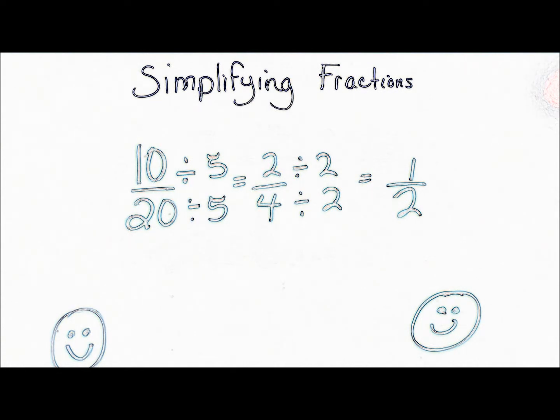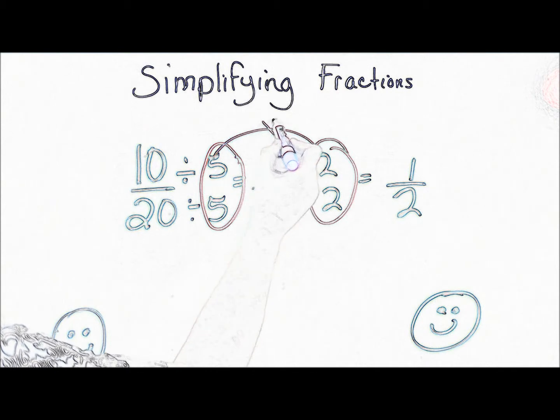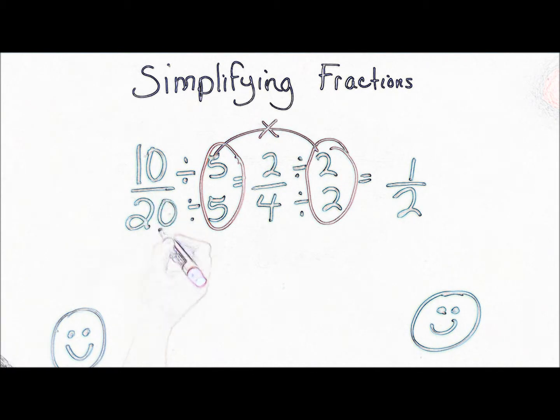Now, if you wanted to know what the greatest common factor was for these, you would take the two numbers that you divided them by and multiply those. 5 times 2 is 10. So you could have used 10 to simplify 10 20ths, and you would have gotten 1 half. Both ways result with the same answer.